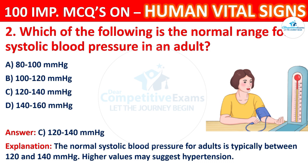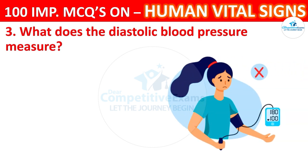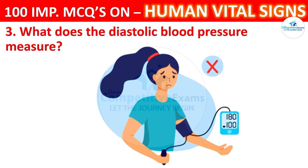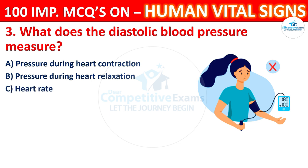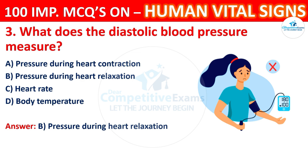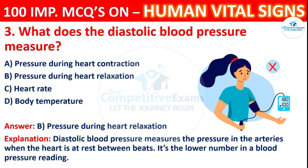Question 3: What does diastolic blood pressure measure? Options: pressure during heart contraction, pressure during heart relaxation, heart rate, or body temperature. The correct answer is B, pressure during heart relaxation. Diastolic blood pressure measures the pressure in the arteries when the heart is at rest between beats. It is the lower number in a blood pressure reading.